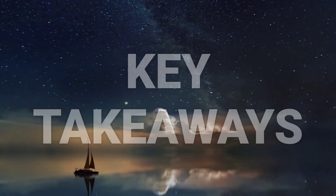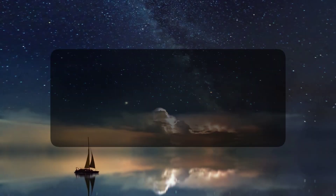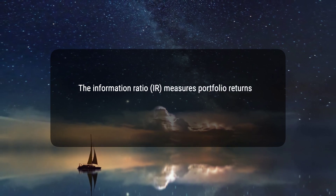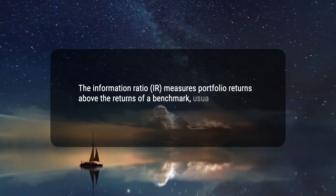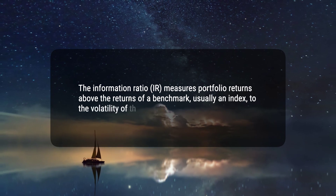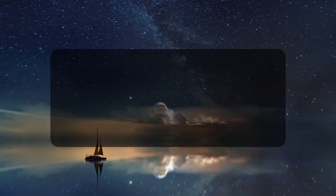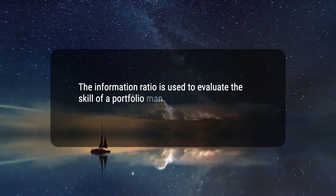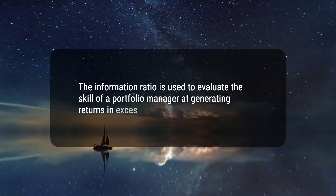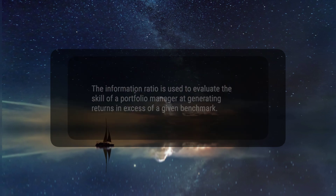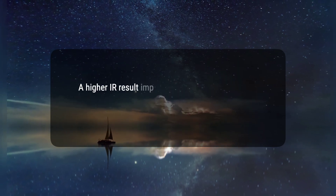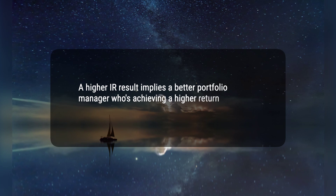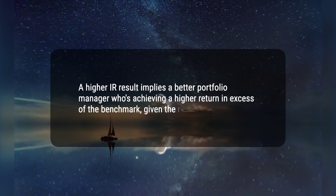Here are three key takeaways. 1. The Information Ratio, IR, measures portfolio returns above the returns of a benchmark, usually an index, relative to the volatility of those returns. 2. The Information Ratio is used to evaluate the skill of a portfolio manager at generating returns in excess of a given benchmark. 3. A higher IR result implies a better portfolio manager who is achieving a higher return in excess of the benchmark, given the risk taken.